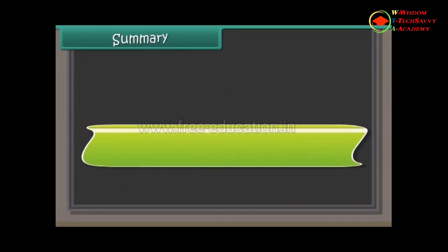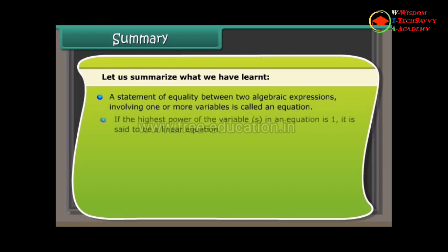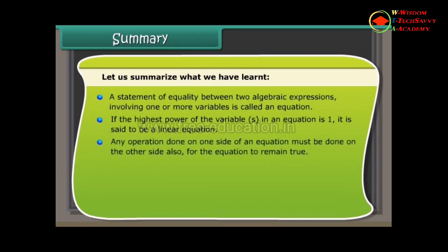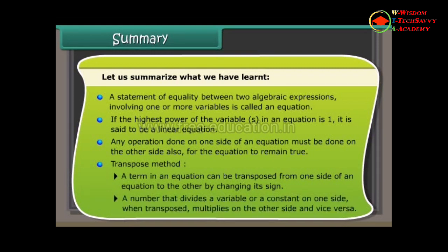Summary: A statement of equality between two algebraic expressions involving one or more variables is called an equation. If the highest power of the variables is 1, it is a linear equation. Any operation on one side must be done on the other side. Transpose method: a term can be moved from one side to the other by changing its sign; a number that divides on one side multiplies on the other when transposed, and vice versa.